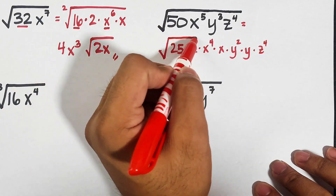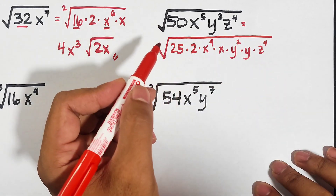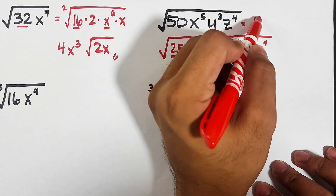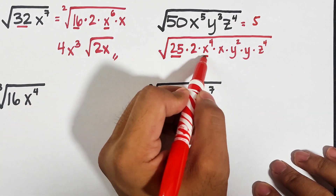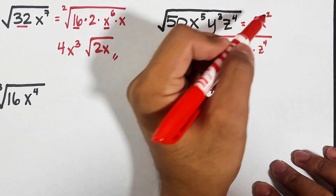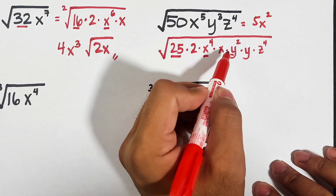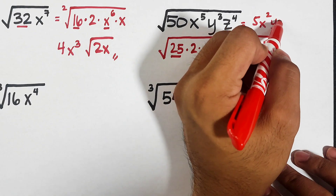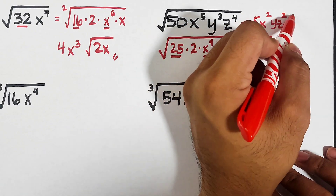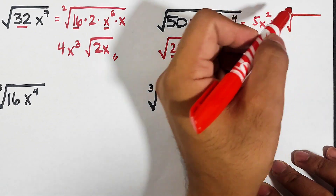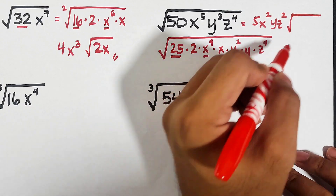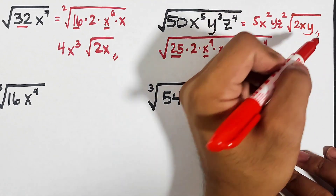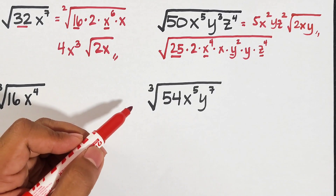For the answer: the square root of 25 is 5; the square root of x to the fourth power is x squared; the square root of y squared is y; the square root of z to the fourth power is z squared. Copy the remaining non-perfect-square factors inside: 2, x, and y. So the answer for item number 5 is 5x squared y z squared times the square root of 2xy.